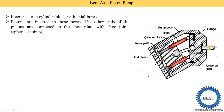This is the driver shaft and this is the flange. This flange is connected to the cylinders by using universal joints. This is the cylinder block, piston, and the pump body — the outer part is called the body. Here you see these are the valve plates and port plates. This is the inlet port and this is the outlet — suction is taken from this side and discharge is taken from this side.